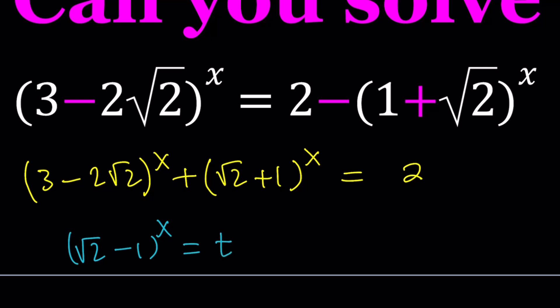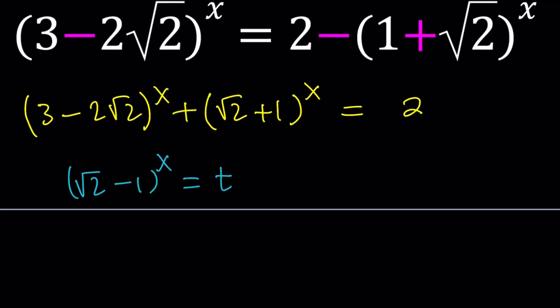Any variable is fine. Now, why do I choose (√2-1)^x? Because it's related to this one, and of course, this one too. So what's the relationship? Let's go ahead and take a look.